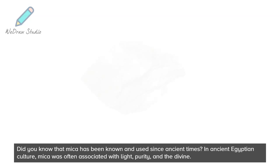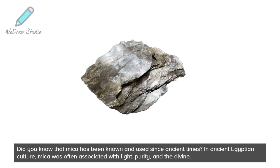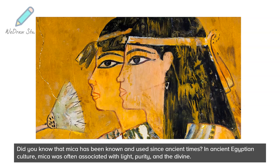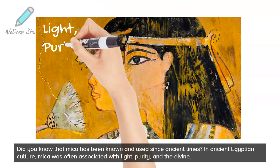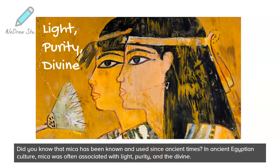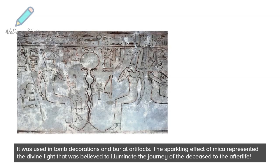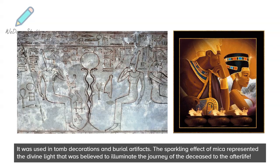Did you know that mica has been known and used since ancient times? In ancient Egyptian culture, mica was often associated with light, purity, and the divine. It was used in tomb decorations and burial artifacts. The sparkling effect of mica represented the divine light that was believed to illuminate the journey of the deceased to the afterlife.